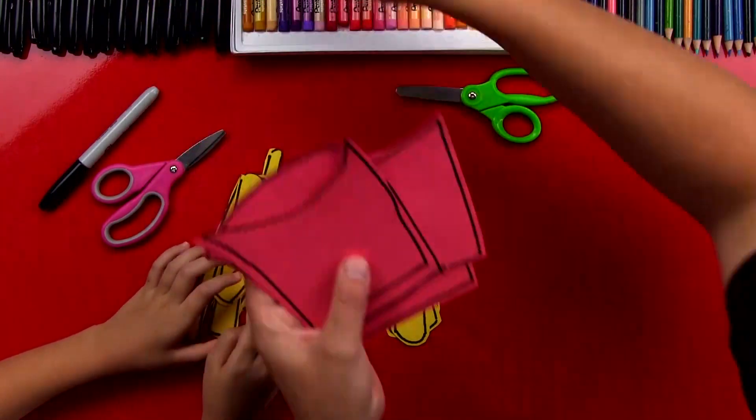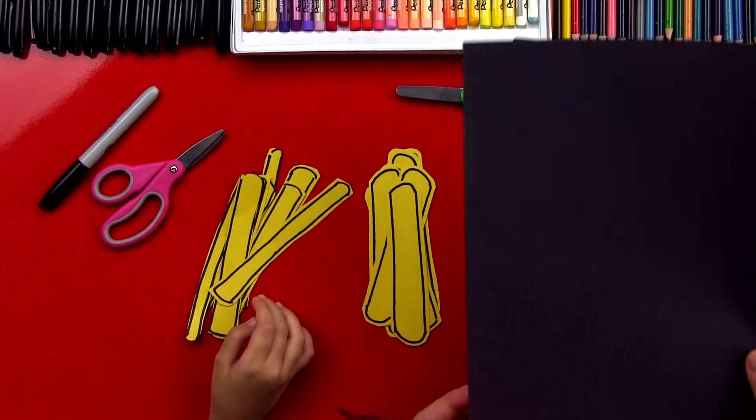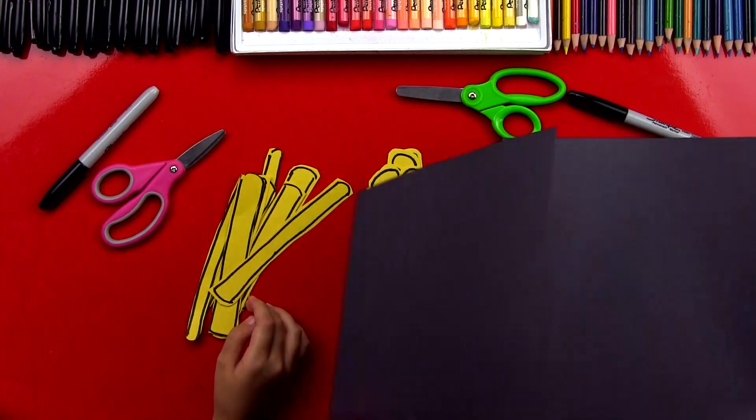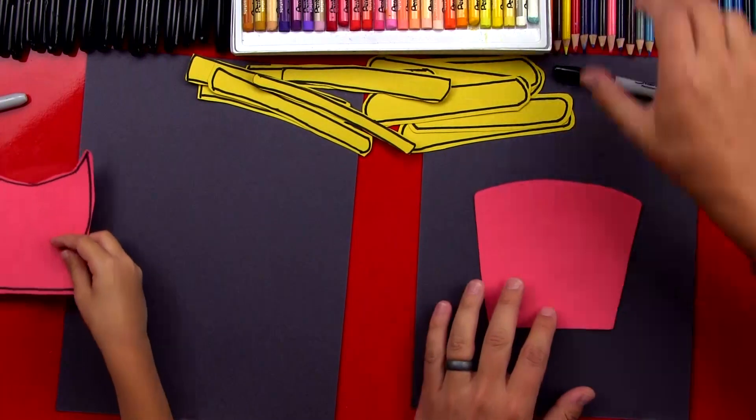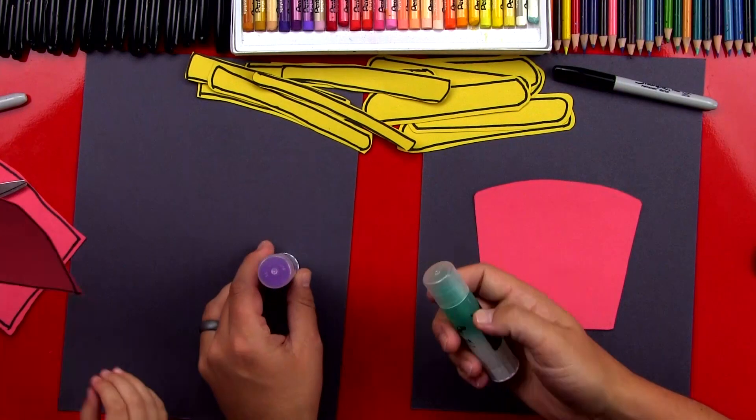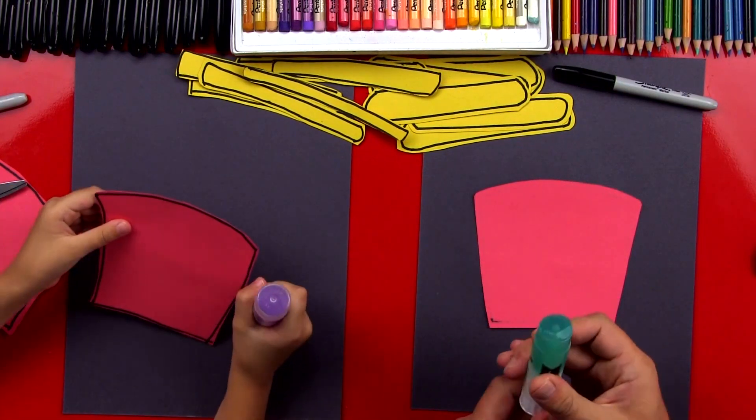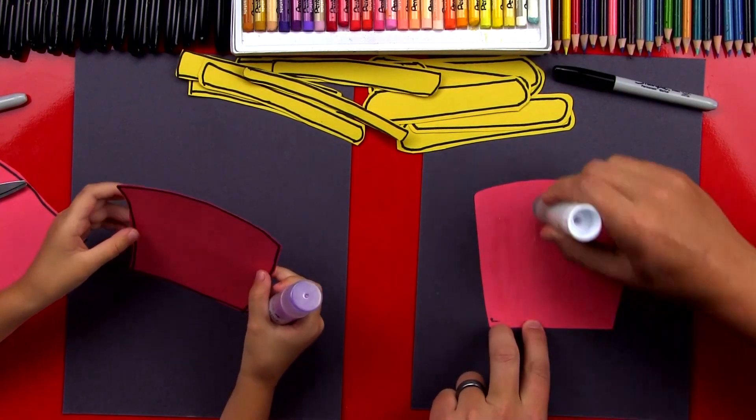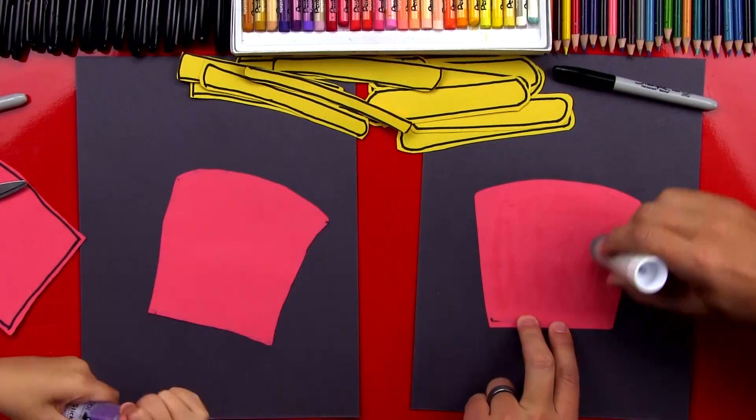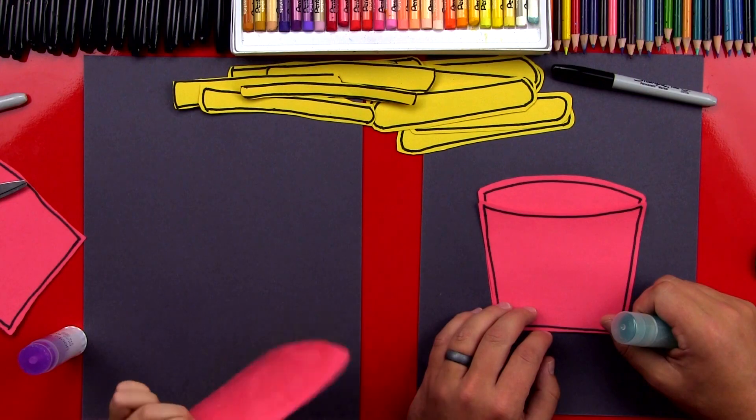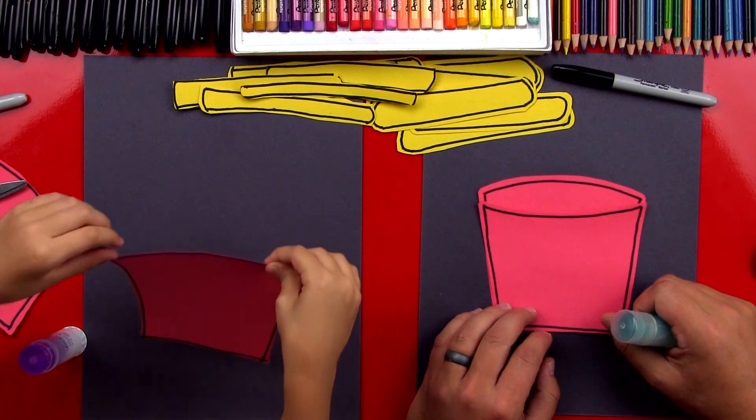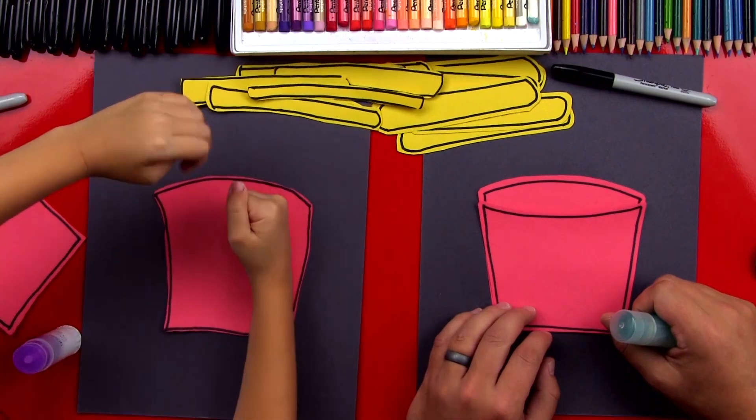Now we're going to get our red paper and also our black paper, and we're going to use the black paper for the background. Let's take the back of our french fry box. We're going to flip it over, and we've got our glue sticks. And we're going to glue the back, and then press it down on the black background. And flip it over and stick it on. Press it down.